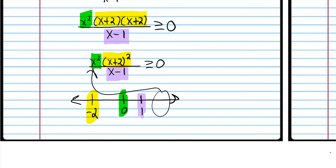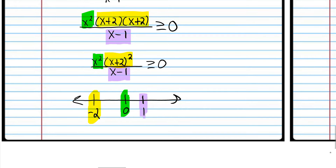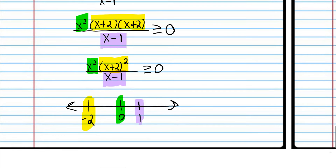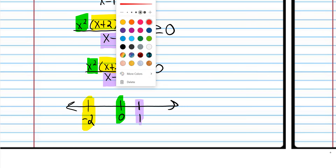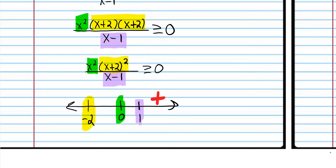Let's plug in two. We don't care about the actual value, only the sign. Two squared is a positive number, plug in two again gives another positive number, and two minus one on the bottom is positive. So a positive divided by a positive is positive. You don't have to write all that — I'm just showing how we're calculating these things.